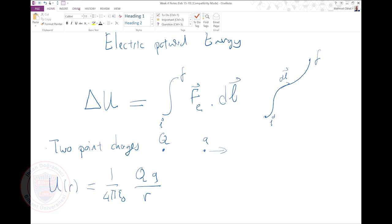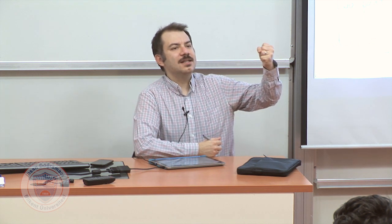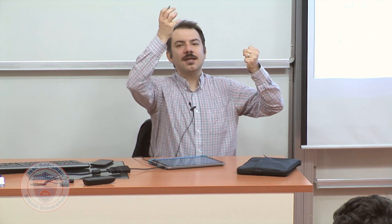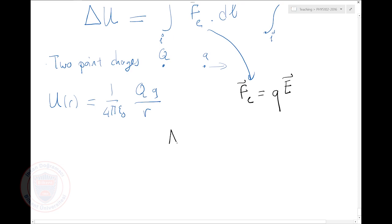When we calculated the electrical force, we said we don't have to do it for pairs of particles all the time. Instead, if I have a single charge in free space, it creates a new object — it creates the electric field. So the electrical force on a charge small q is always Q times E, where E is the electric field. I can write delta U as the integral from initial to final of Q times E dot dl.